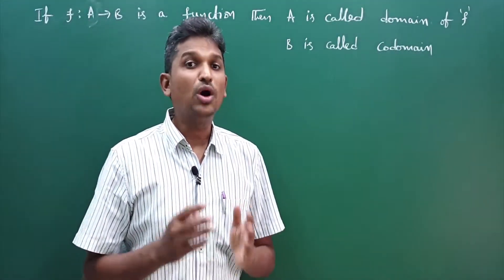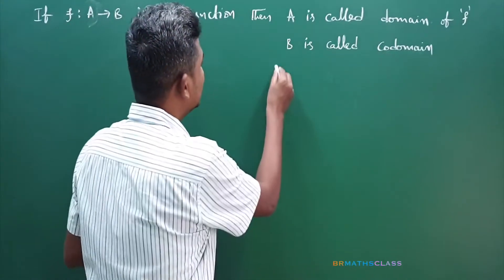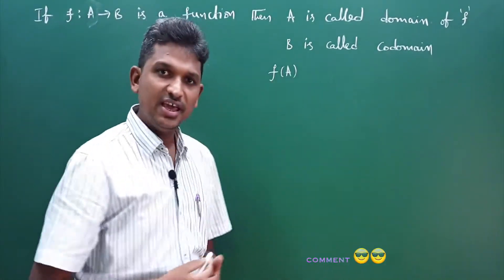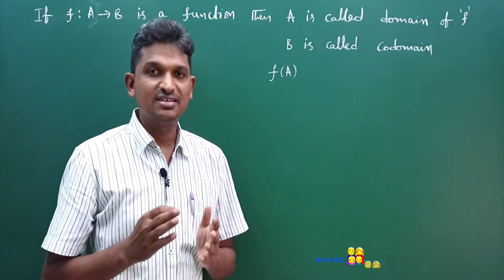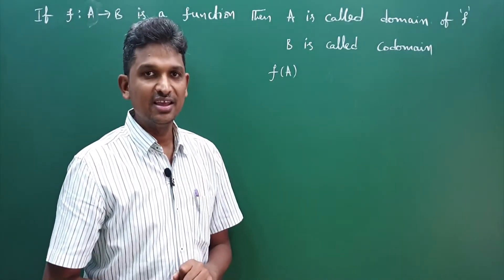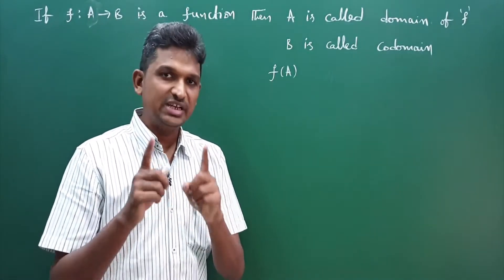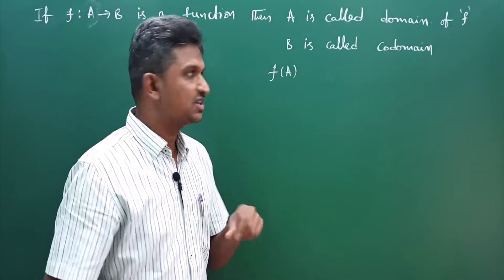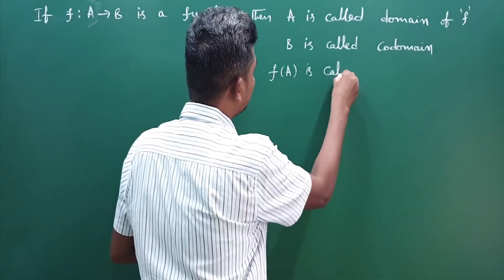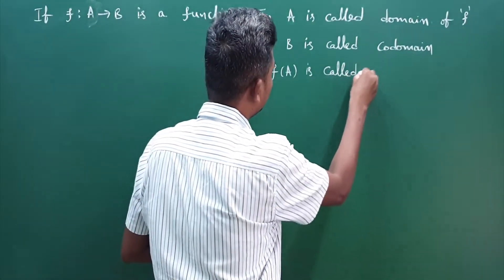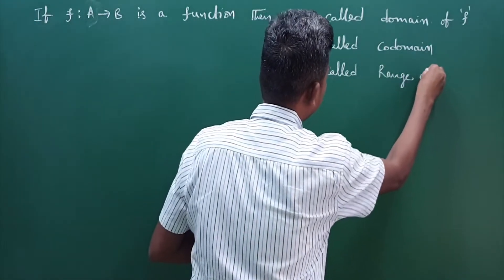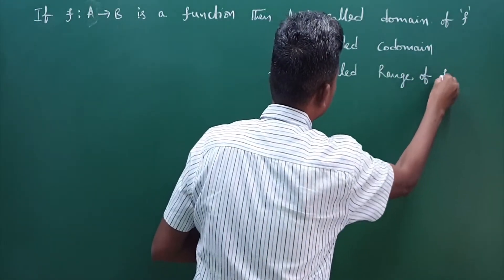And what is range? Here, f of A — f of A means the set of all images of set A. I'll tell you with an example so you will come to know what is range. f of A is called the range of f.